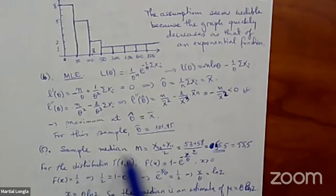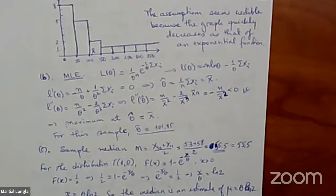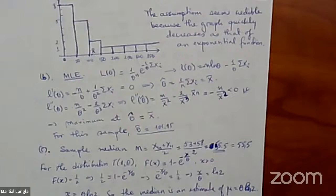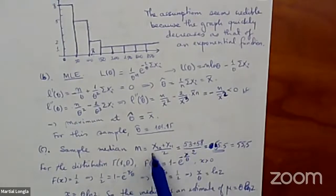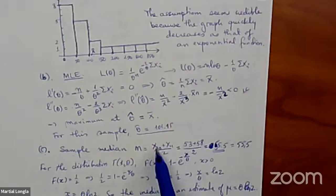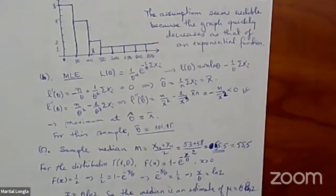Part c asks for the sample median. When you have an even number of observations, the sample median is the average of the two middle observations. When you have an odd number, the median is the single middle observation after sorting smallest to largest. In this case we have n = 20 observations, so the two middle values are the 10th and 11th. Add them and divide by two to get the median.